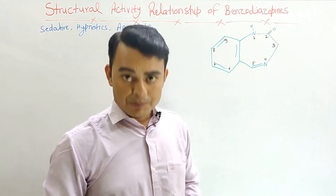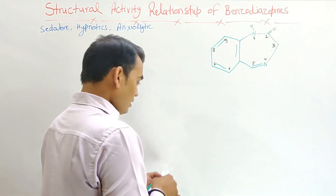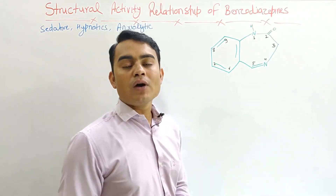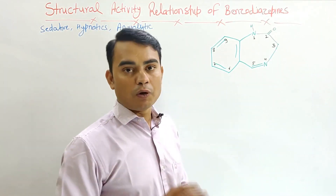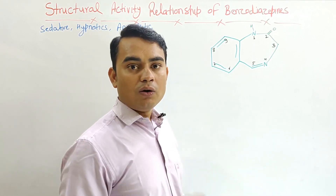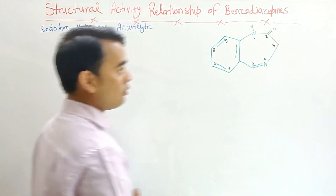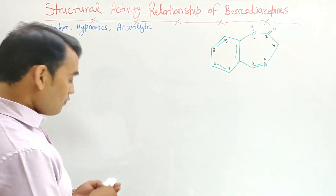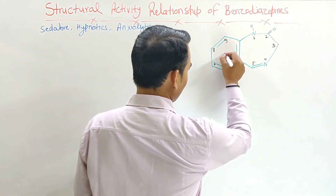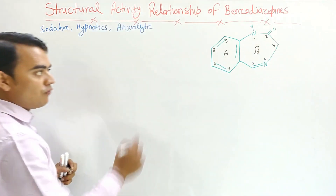Substitution can take place at different positions, and these substitutions affect both the pharmacokinetic and pharmacodynamic properties of the benzodiazepine. We will discuss one by one what will happen if any substitution takes place at any group. Suppose this is ring A and this is ring B.